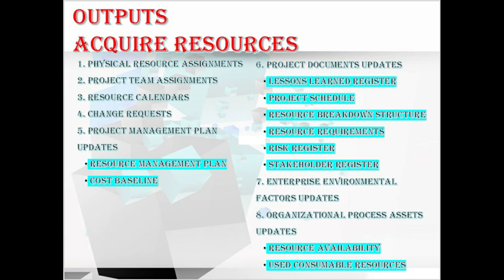Moving to the outputs, first we have physical resource assignments. This documentation records the material, equipment, supplies, location, and any other physical resources that will be used during the project. Next is project team assignments, which documents team members and their roles and responsibilities, including the project team directory and names inserted into the project management plan such as project organization charts and schedules. Resource calendars identify the working days, shifts, start and end of business hours, weekends, and public holidays when each specific resource is available and assigned.